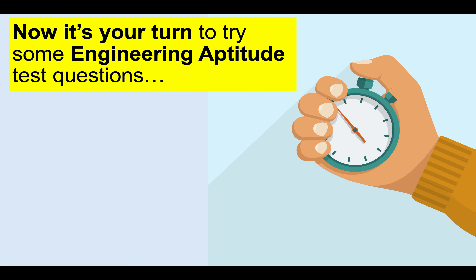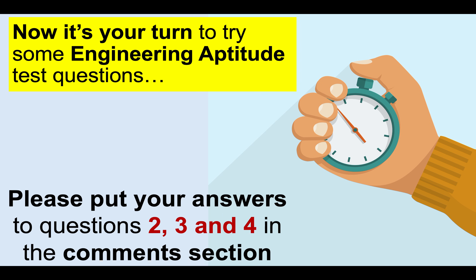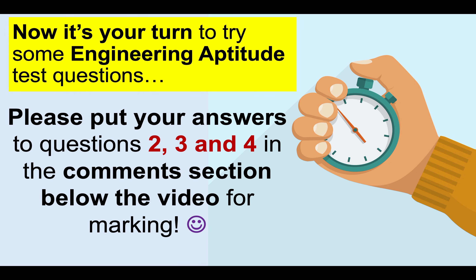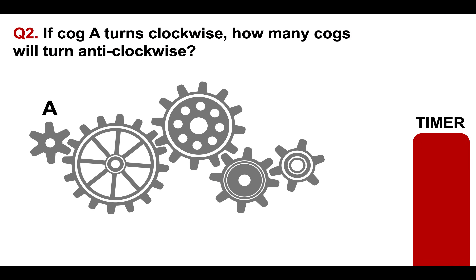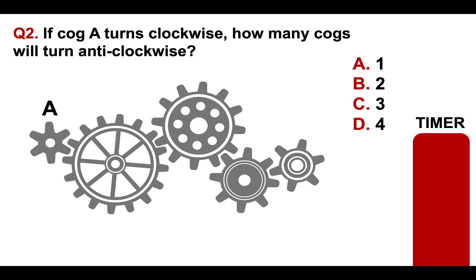Now it's your turn to try some engineering aptitude test questions. Please put your answers to questions two, three, and four in the comments section below the video for marking — I will come on each day and mark your answers. Question two: if COG A turns clockwise, how many COGs will turn anti-clockwise? Is it A: 1, B: 2, C: 3, or D: 4?